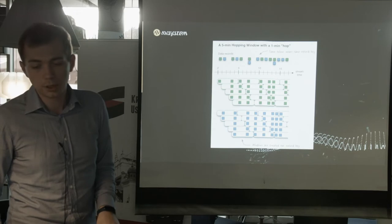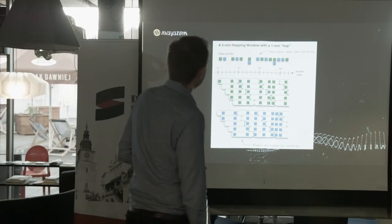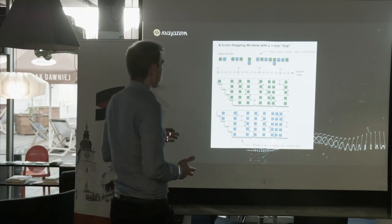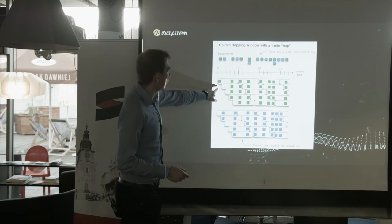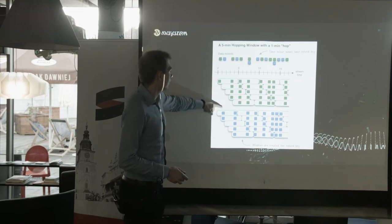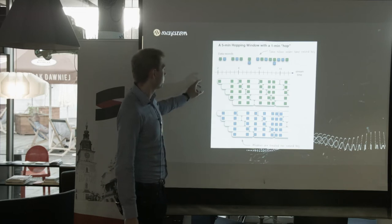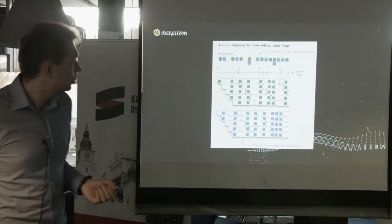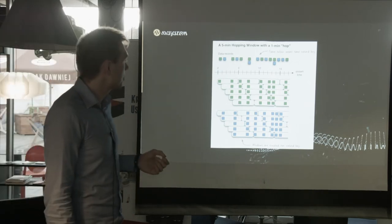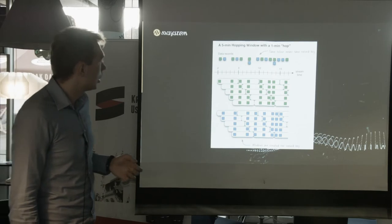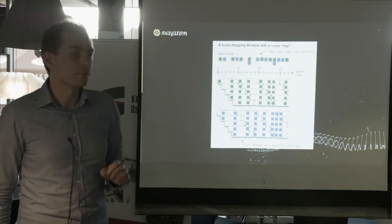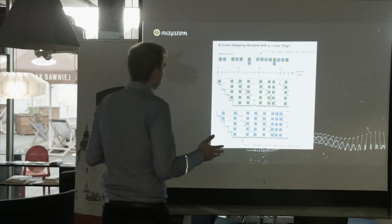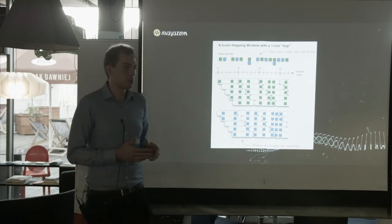Another type is the hopping window. When talking about window definition, we talk about three things: first is window duration, second is window interval — here the interval is very small, about one-fifth of the window duration — and the third parameter is the grace period, so that we can accept late events. When processing streams sometimes an event is not delivered on time, and the grace period is the window duration plus additional time to accept those late events.